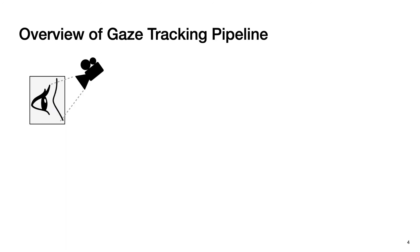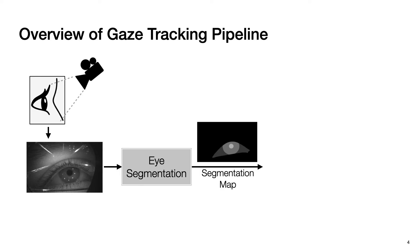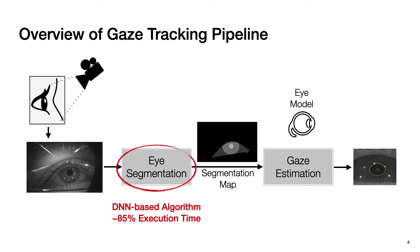Let me introduce the overall gaze tracking pipeline. The algorithm takes a grayscale image and feeds it into the eye segmentation stage, which classifies each pixel into one of four classes. The segmentation result is then used in the gaze estimation stage to predict gaze direction. The state-of-the-art pipelines typically use DNN-based algorithms in the eye segmentation stage, and those algorithms take more than 85% of total execution time. So in this work, we focus on leveraging ROI in near-eye images to accelerate the eye segmentation stage.